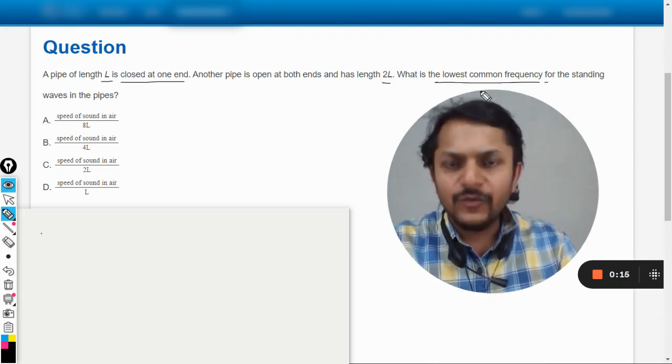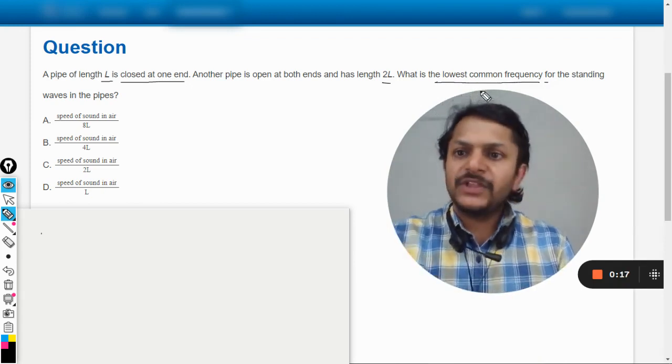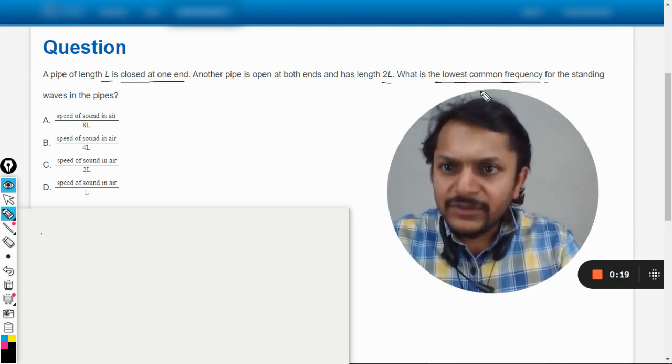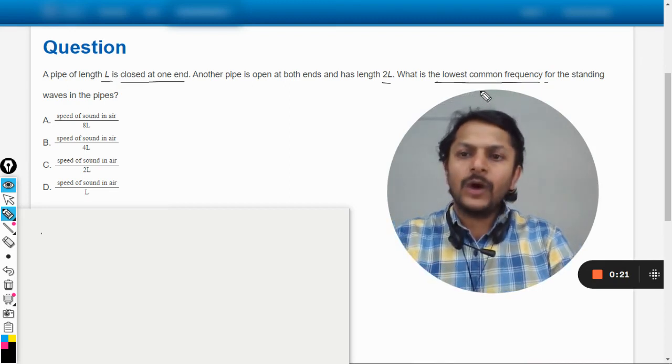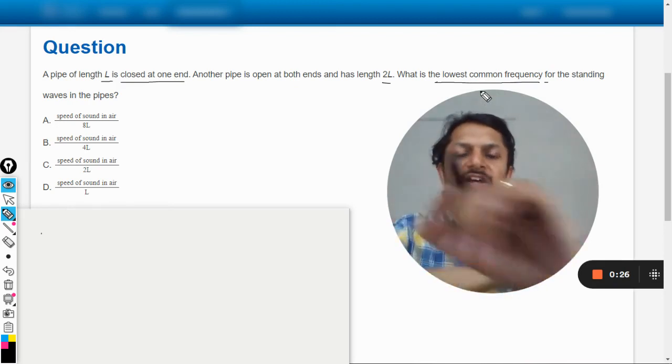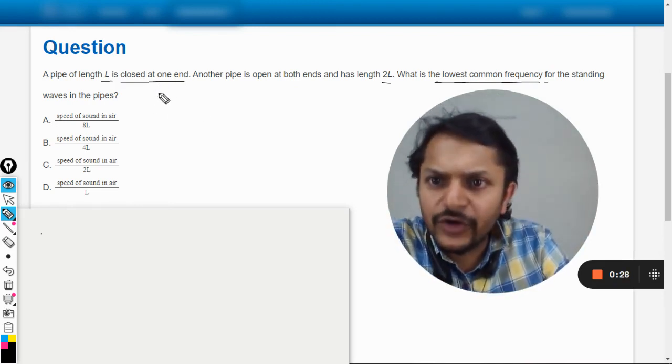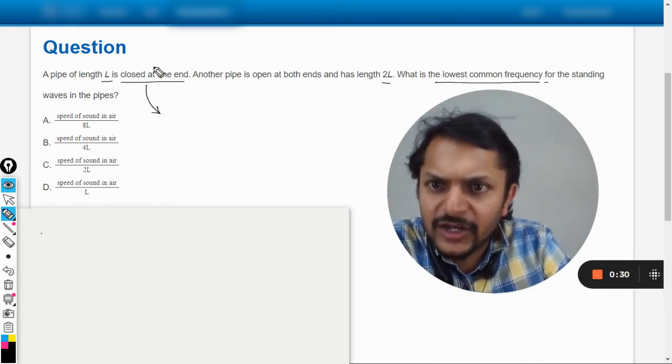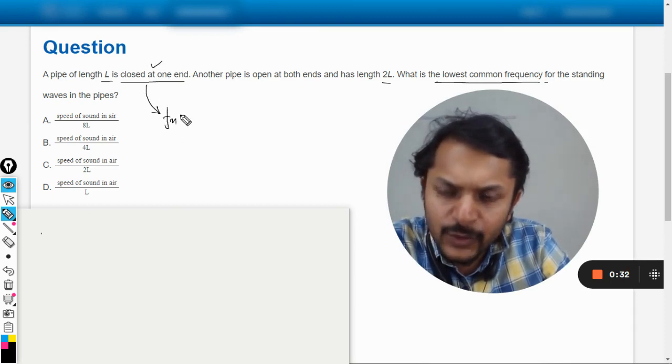frequency for the standing waves in the pipes? There are two pipes: one pipe of length L is closed at one end, and another pipe of length 2L is open at both ends. We have to find the frequencies first. This one is closed at one end, and the frequency for this will